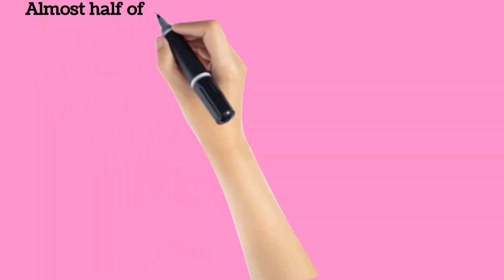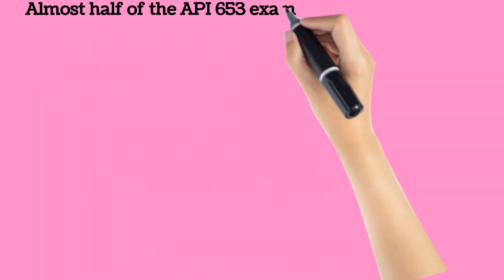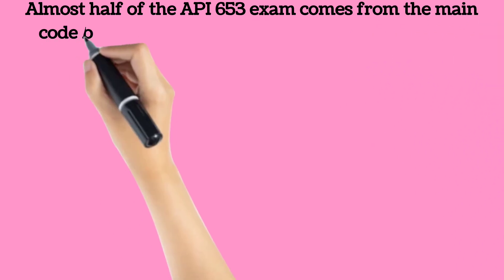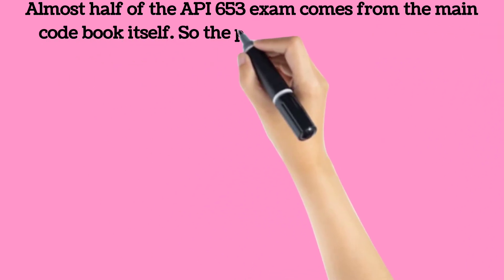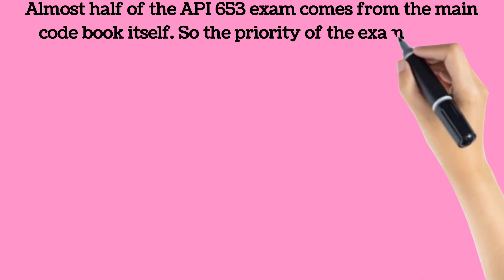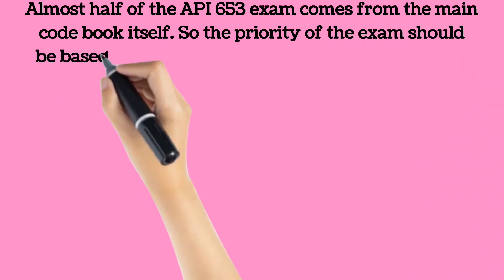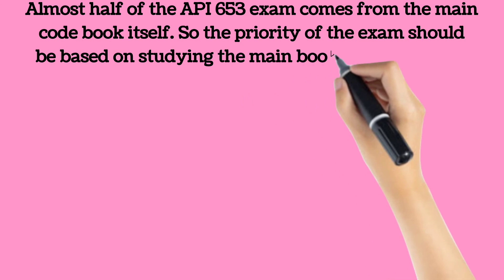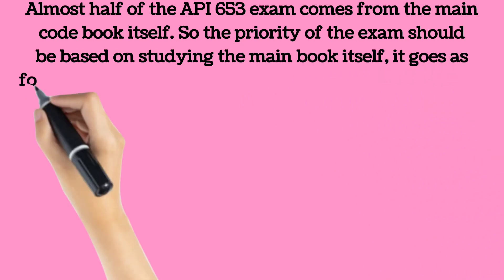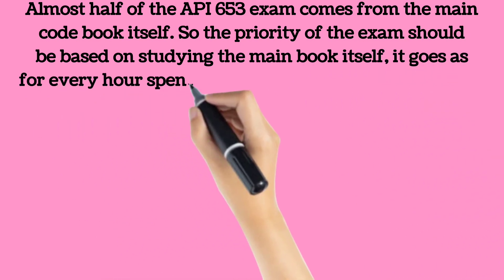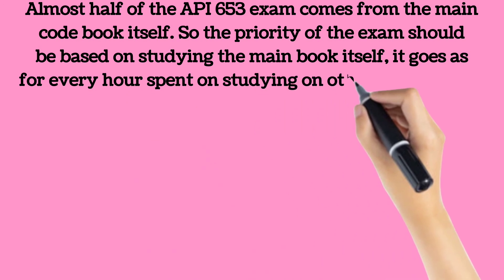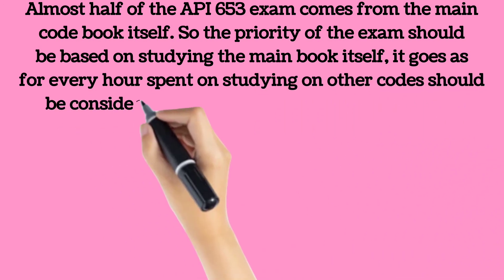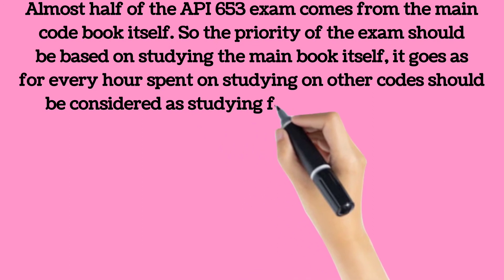Almost half of the API 653 exam comes from the main code book itself, so study priority should focus on that book first. For every one hour spent studying other codes, consider spending two hours on API 653. There will be 80 to 85 questions directly from the API 653 main code book.